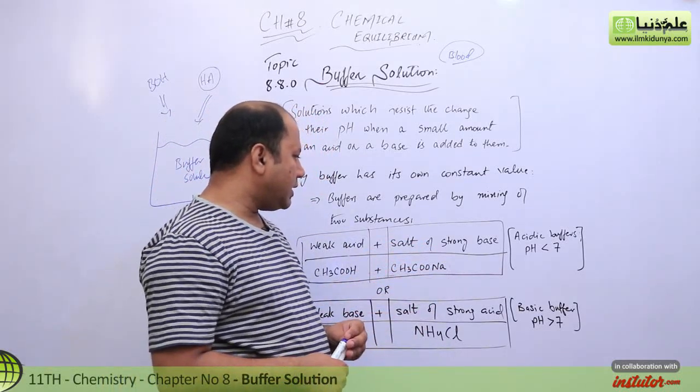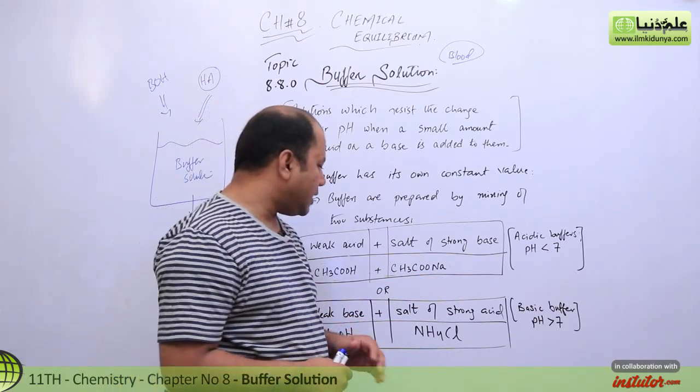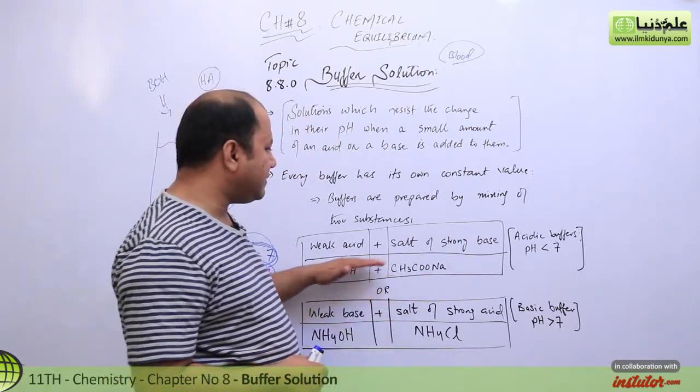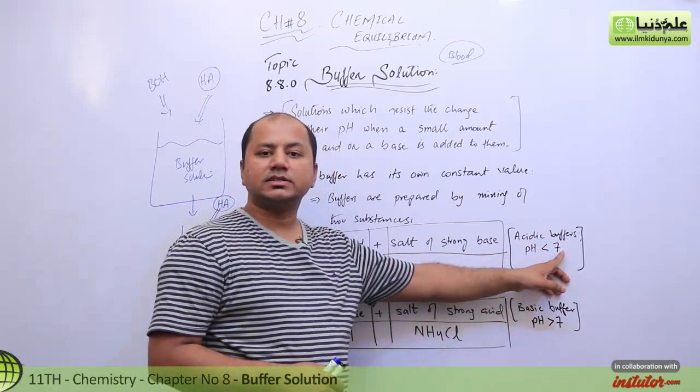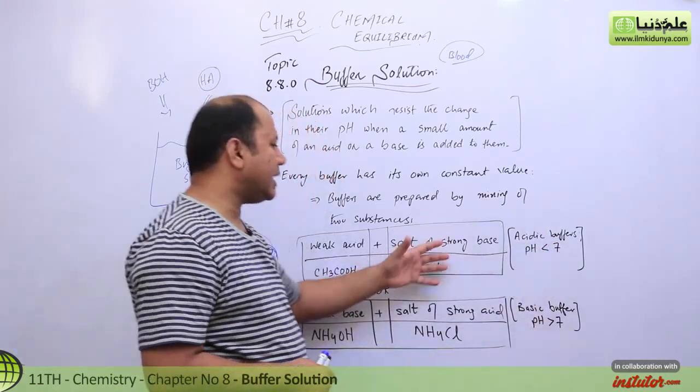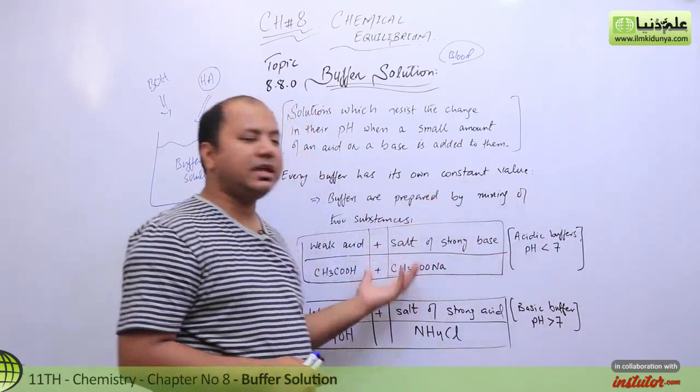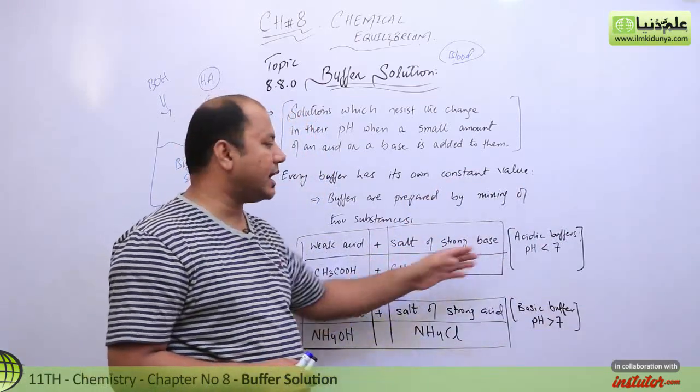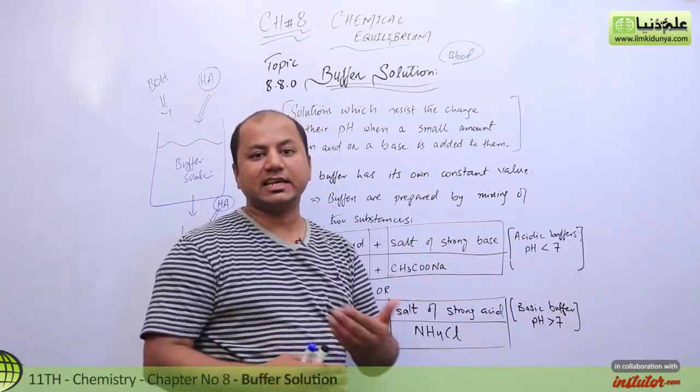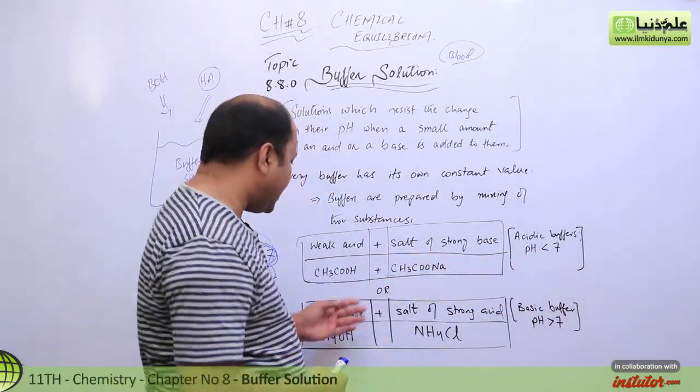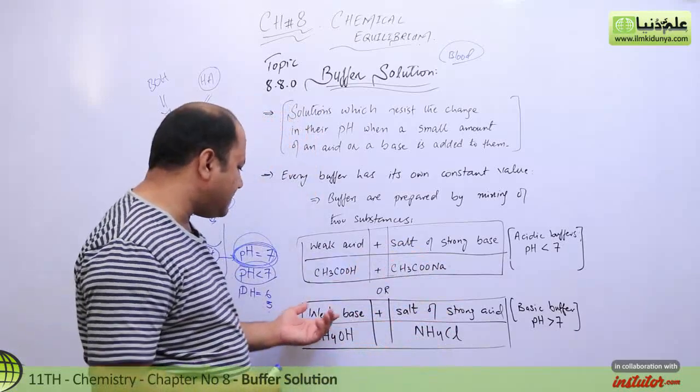So what I am guessing over here is we just have this kind of solution. This acidic buffer ki pH less than 7 hogi aur isko sustain kar rahe hain less than 7 pH ko. Acidic agar aap add karenge yaani acidic nature wale solutions ko sustain kar sakta hai.